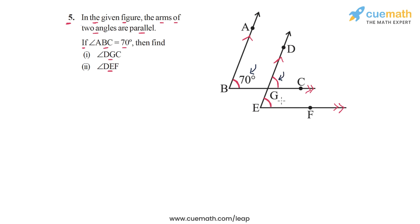And then we see that the angle at E, DEF, forms a corresponding angle pair with DGC. So DEF will also be equal to DGC, which is equal to 70 degrees. So both of these will be equal to 70 degrees.